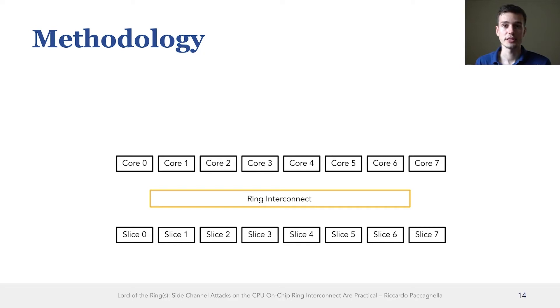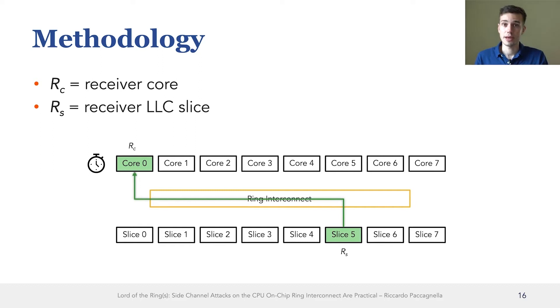In particular, we built two processes, a receiver and a sender. The receiver takes as an input a core and a slice, RC and RS. It pins itself to the given core and it starts timing loads from the target slice. While the sender also receives as an input a sender core and a sender slice, SC and SS. But instead of timing these loads, it just issues many of them, bombarding the target slice with many loads.